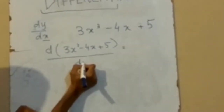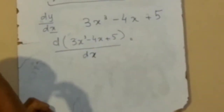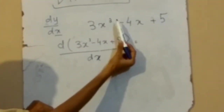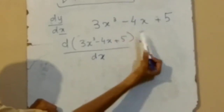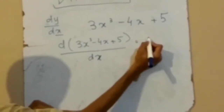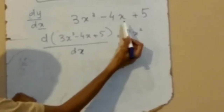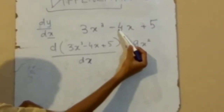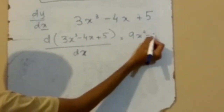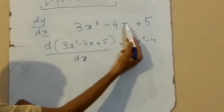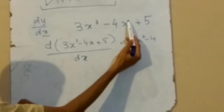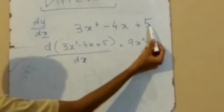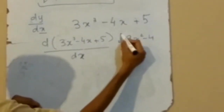So it would be x. If we differentiate, the power goes to the coefficient and multiplies with it, with a reduction of one in the power. So we get 9x². For the term minus 4x, the power is 1, multiplied by minus 4 gives minus 4, and the power reduces to 0, giving just minus 4. The constant 5 has no derivative, so it is 0. The answer is 9x² minus 4.